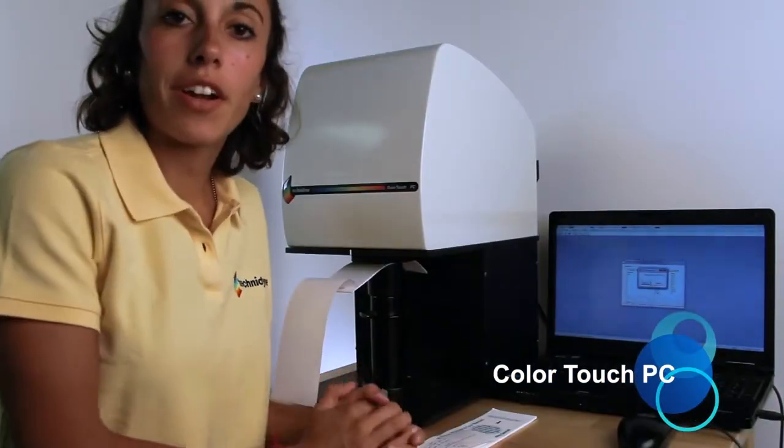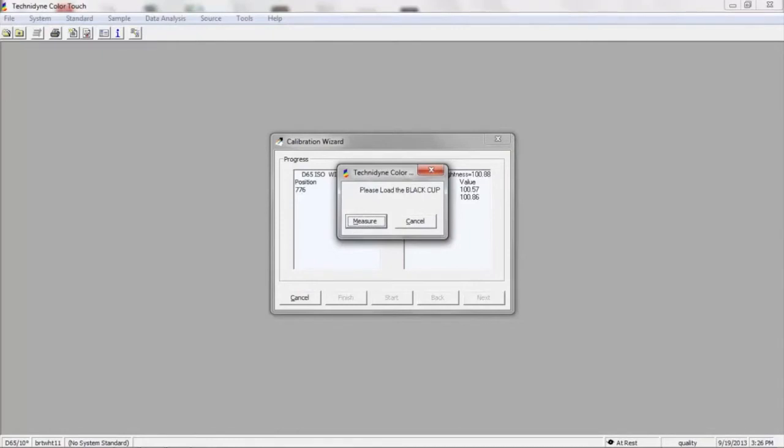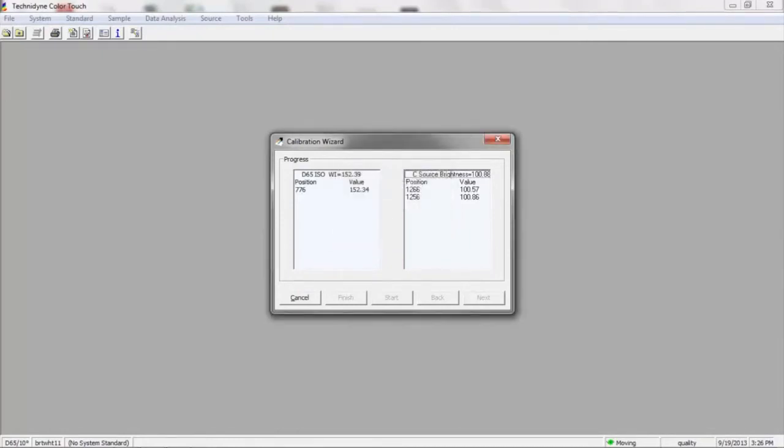When that's finished, our next step is to load our black cup and press measure. This is to verify the zero levels at each of the calibration positions.